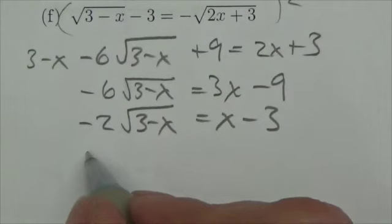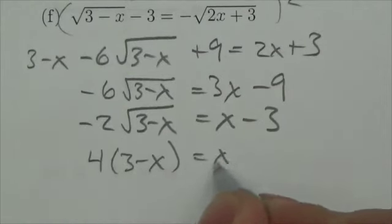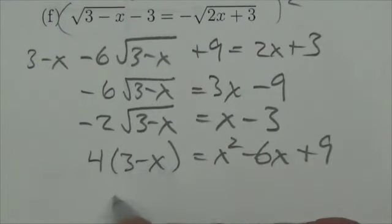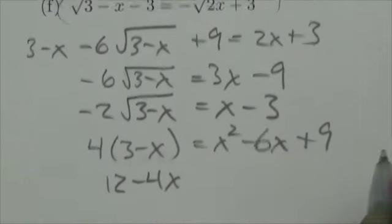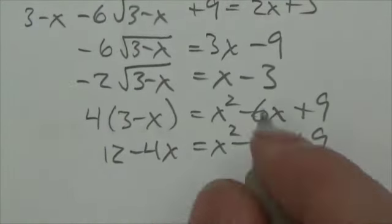And now I'm going to square both sides. So I'll get 4 times 3 minus x is equal to x squared minus 6x plus 9. So 12 minus 4x equals x squared minus 6x plus 9. Let's bring that over.